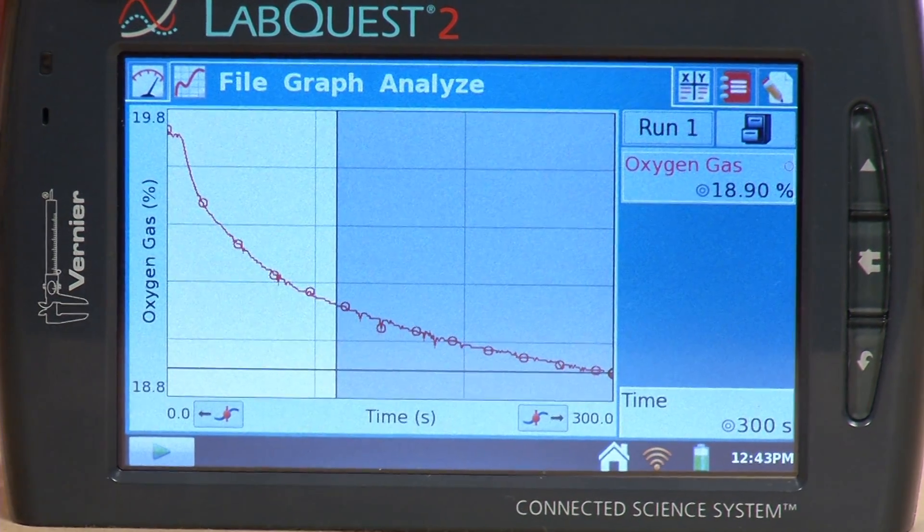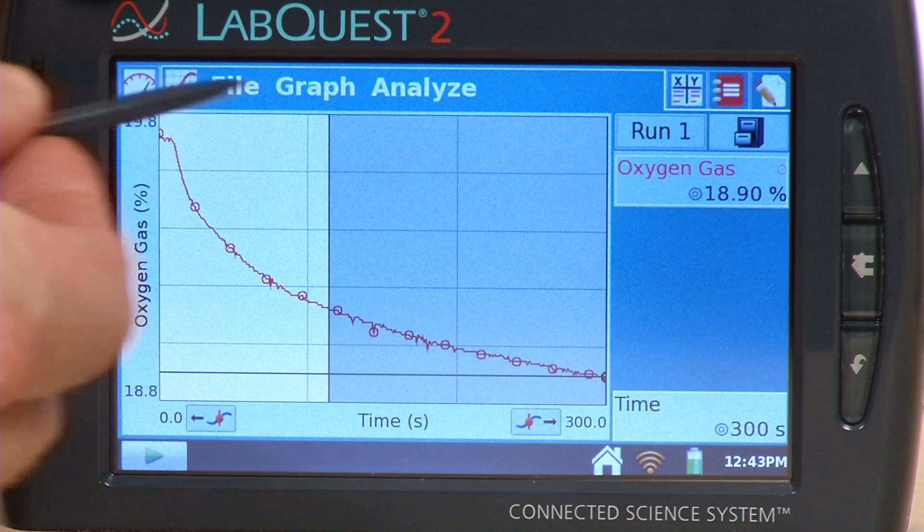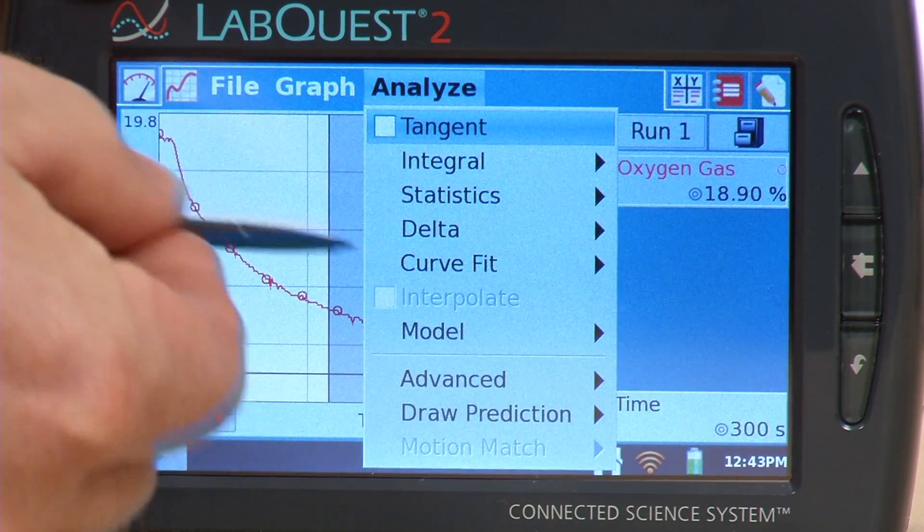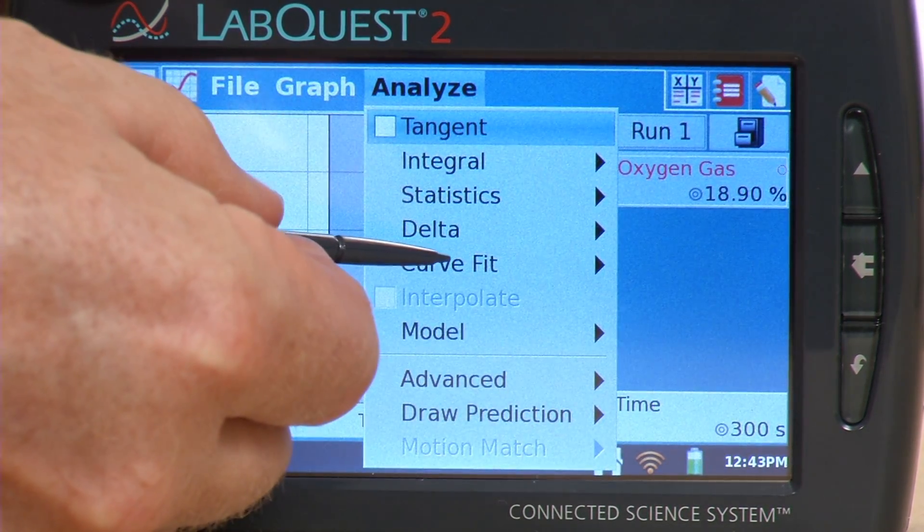And so I'm highlighting just that region of the graph. And that way when I do the curve fit, it will use just those data to calculate that. So I'll do Curve Fit.